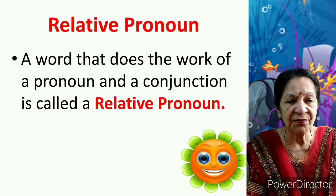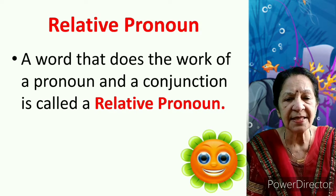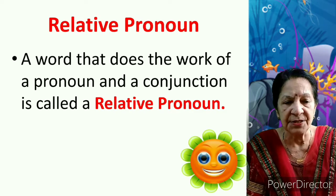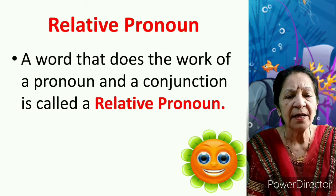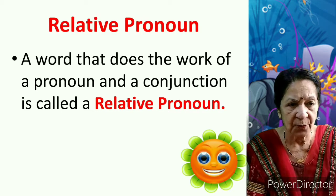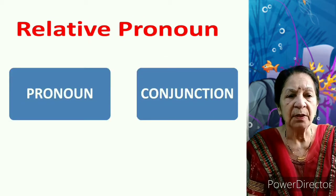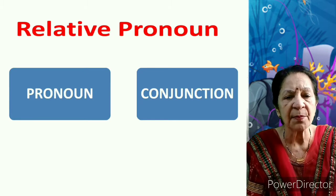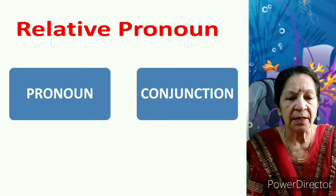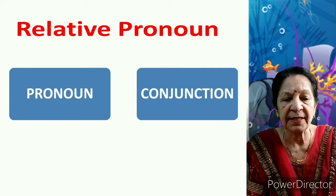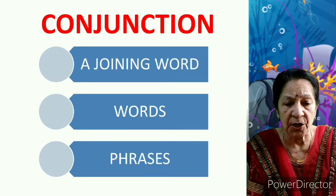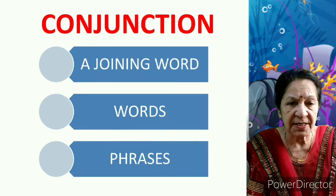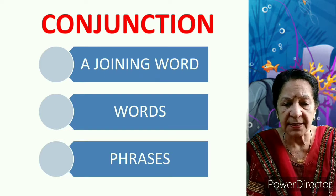Now, relative pronoun. A word that does the work of a pronoun and a conjunction is called a relative pronoun. The word that acts as both a pronoun and a conjunction is called a relative pronoun. A conjunction is a joining word — it joins words, phrases and two sentences.